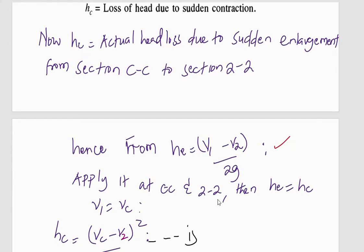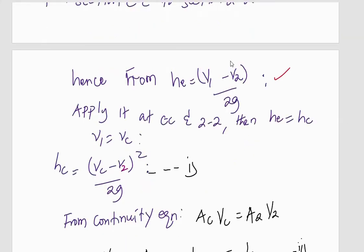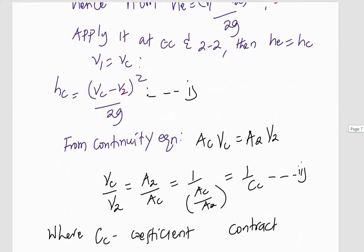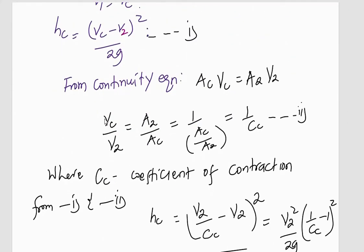So if we substitute in that formula the value of hc and V1 equal to Vc, then if we also borrow information from continuity equation, Ac times Vc is equal to A2 times V2, then it means Vc divided by V2 is equal to A2 divided by Ac.